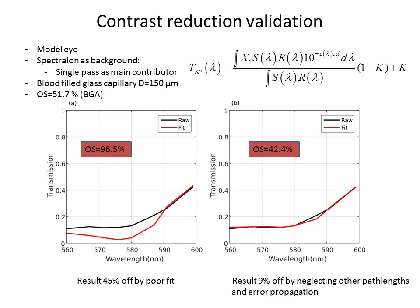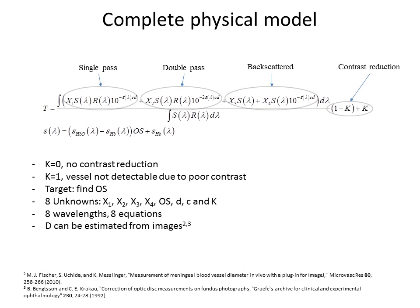The complete physical model that we have is this one, which is quite long. It has single-pass, double-pass, backscattered, and the contrast reduction. We will have eight unknowns and eight measurements, but we can reduce it to seven unknowns because we can estimate d, the diameter. Then we'll have seven unknowns, which will be X1, X2, X3, and X4, which are the parameters for the single, double, and backscattered paths. And we'll have oxygen saturation OS, hemoglobin concentration C, and K, which is for the contrast reduction.